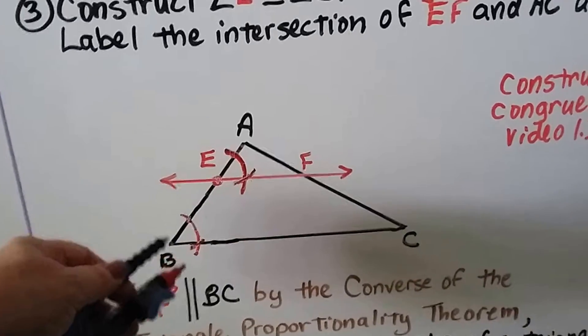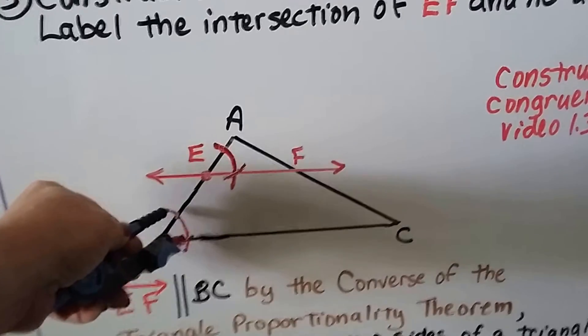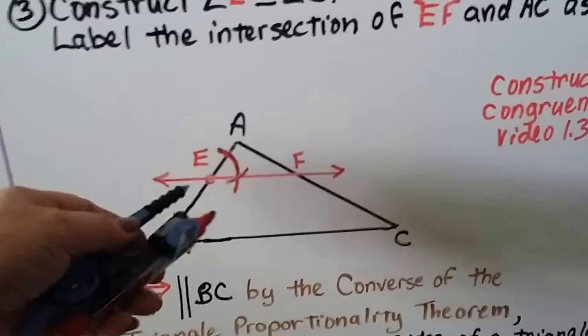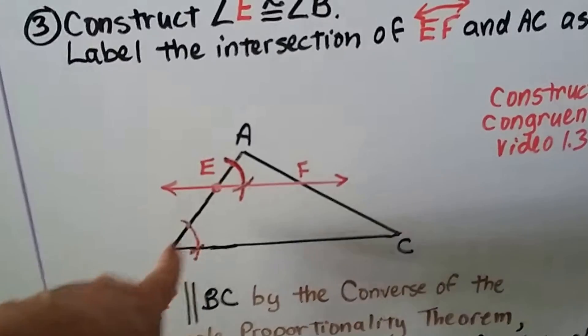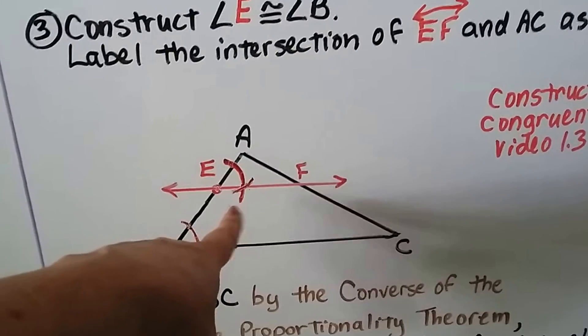Then I take my compass and I measure that distance. Once I get that distance set, don't move your compass, put your point on E and make an arc that goes through AB and intersects it and comes down a bit below E. So you're going to make this arc here.